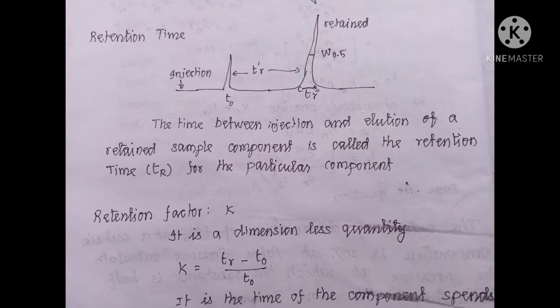w_half or w₀.₅ is the width of the signal at half of its height. Either of these can be used for the calculation of t_r — that means retention time. The retention time is the time difference between the injection of the sample and the collection of the retained component.